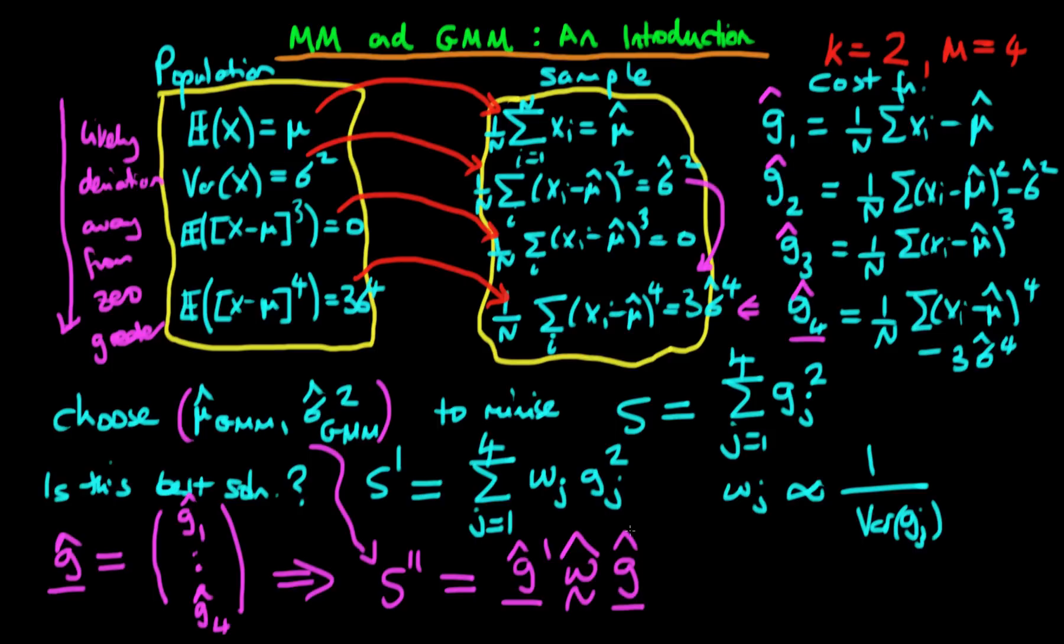And that's going to formulate part of the two-step procedure, which we in general use—it's one of the methods used anyway—to come up with asymptotically efficient GMM estimates.